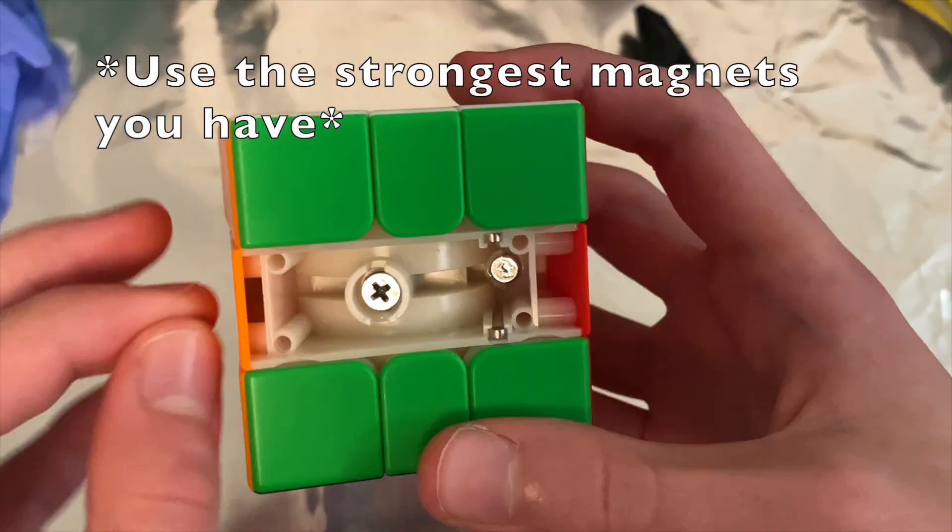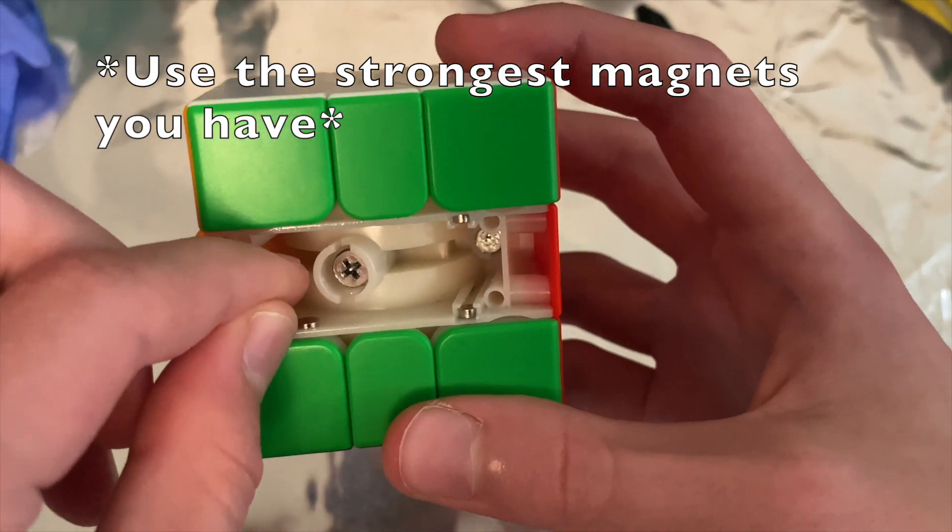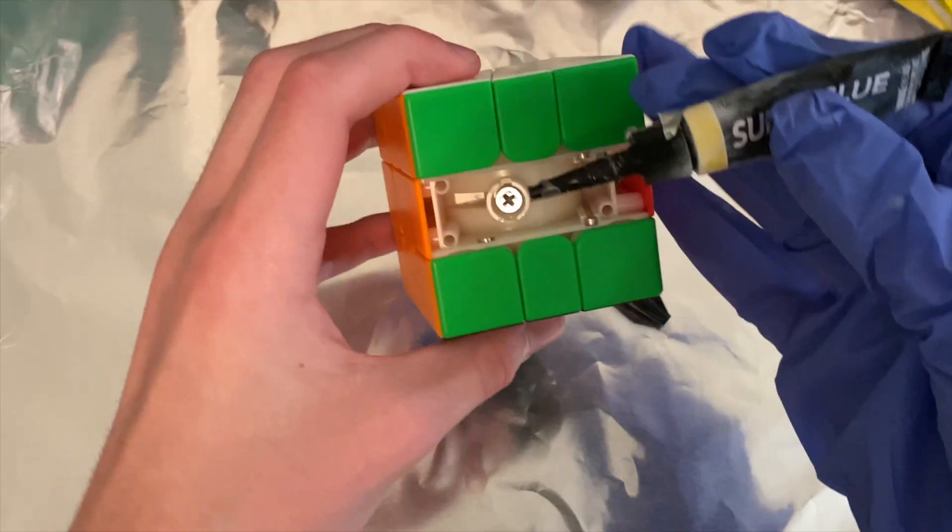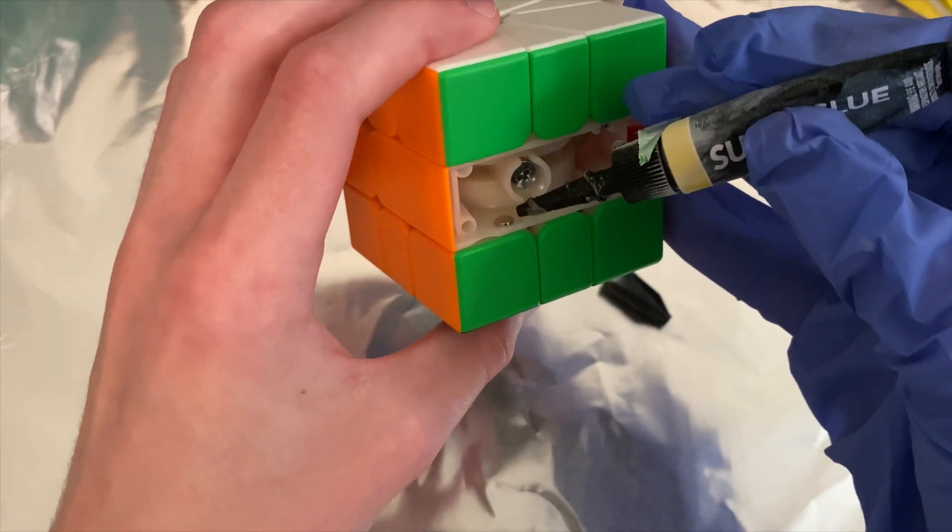You're going to need some magnets and glue. So you're just going to take a magnet and place it down here - it should attract. Now you're going to take your glue and just glue the magnet in place.